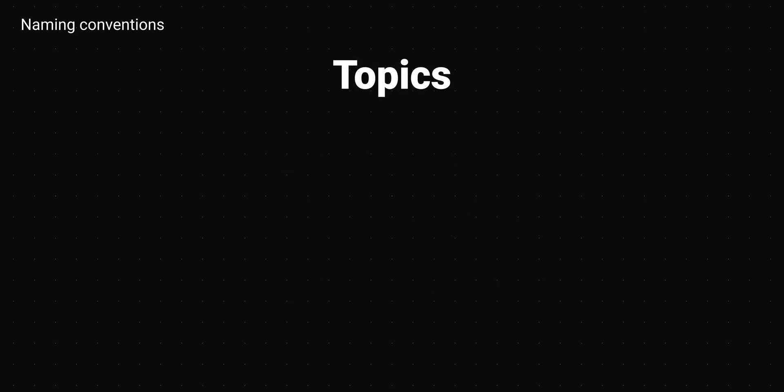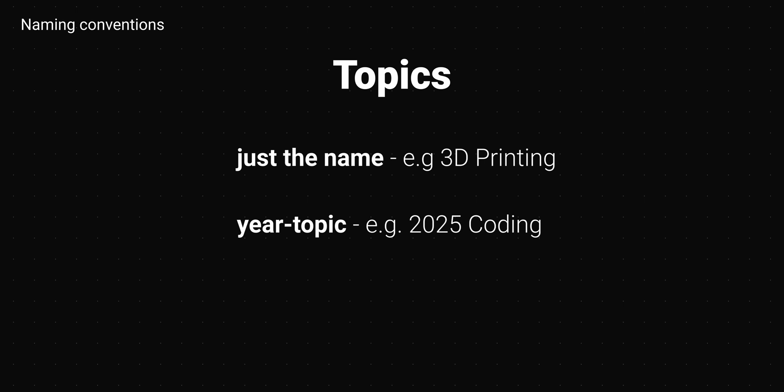For topics I just use the name of the topic, like '3D printing'. I try to avoid dashes so it doesn't conflict with the dates — I think it has the cleanest look and is quite searchable. You can also combine the year with the topic. If you use all these rules and create a folder system you will come up with something similar to this one.